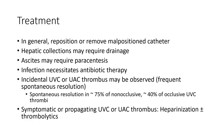Treatment: In general, reposition or remove a malpositioned catheter. Hepatic collections may require drainage. Ascites may require paracentesis. Infection necessitates antibiotic therapy. Incidental UVC or UAC thrombus may be observed, as spontaneous resolution occurs in 75% of non-occlusive and 40% of occlusive UVC thrombi. Symptomatic or propagating thrombus warrants heparinization plus or minus thrombolysis.